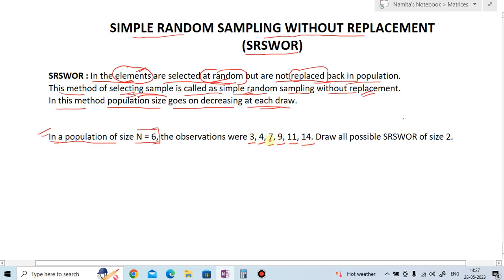How much is the population? 1, 2, 3, 4, 5, 6. So population size is 6, and these are the individual elements or we can say observations. Now what we have to do? Draw all possible simple random sampling without replacement of size 2.